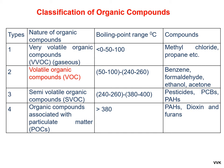The third group comprises semi-volatile organic compounds, which exist in both gaseous phase and particulate phase. Their boiling point ranges from 240°C to 400°C, and pesticides, polychlorinated biphenyls, and polynuclear aromatic hydrocarbons are found in this group. The last group includes organic compounds associated with particulates having a boiling point above 380°C, where PHS, dioxins, and furans are associated in particulate phase.